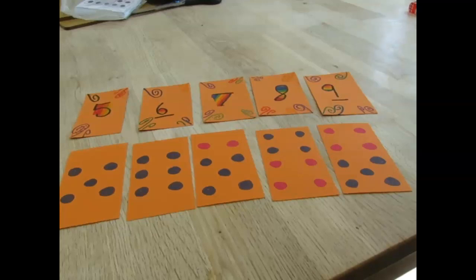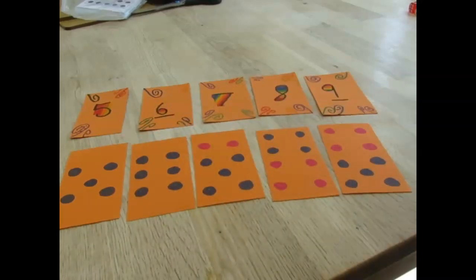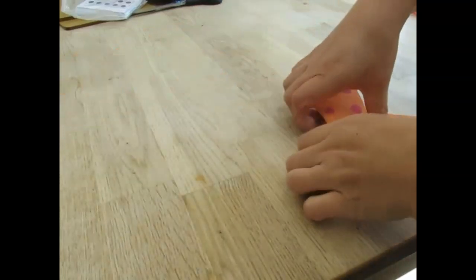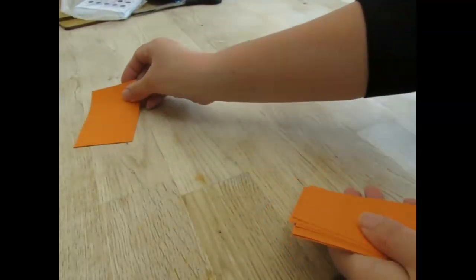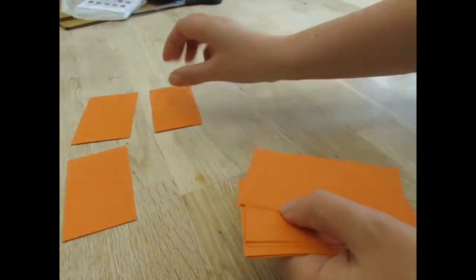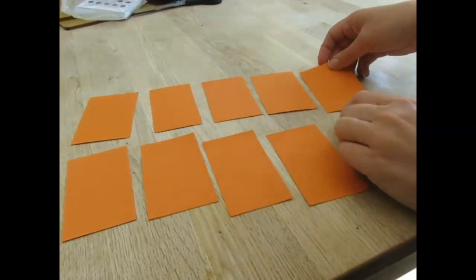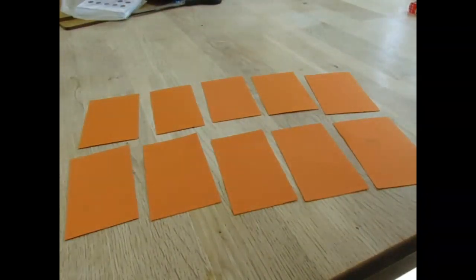If I was going to play a memory pairs game I wouldn't necessarily use all the cards. I might pick some of the numbers that the children are less confident with. So you can see here I picked five, six, seven, eight and nine in the dot cards and the same with the digit cards or the number cards. Once I've chosen the cards that I'm going to use I'm going to shuffle them all up, make sure they're nicely shuffled, and I'm going to lay them out in a pattern. Having it in a pattern just helps the children perhaps remember which cards they've turned over rather than being in a random scatter.